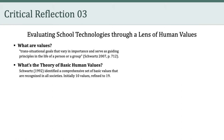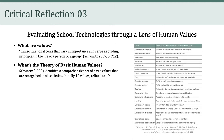Initially, he identified 10 individual human values, which was eventually revised and expanded up to 19 values in 2012. And you can see a list of those 19 values here on the right. One value, for example, is achievement, or success according to social standards. Another value is benevolence, caring, or the devotion to the welfare of in-group members.